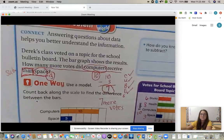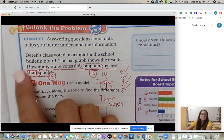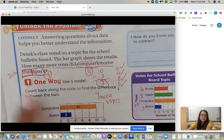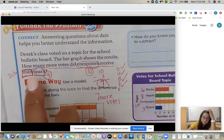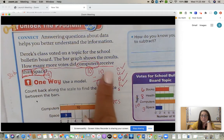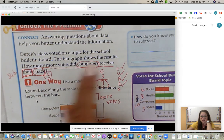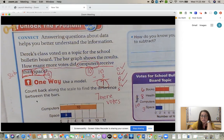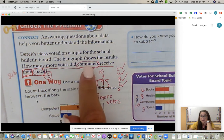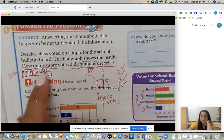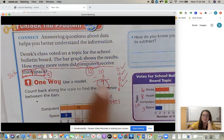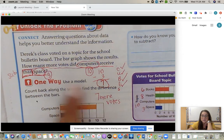Derek's class voted on a topic for the school bulletin board. The bar graph shows the results. Here's our question: How many more votes did computers receive than space? We have to do our cubes. First, you always underline the question. Then you jump up to circle the key numbers. We don't have numbers, but our categories are on the side of your bar graph. So we circle computers and space. How many chose computers? Ten. How many chose space? Three.